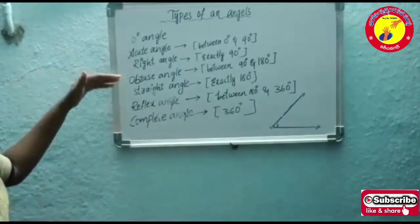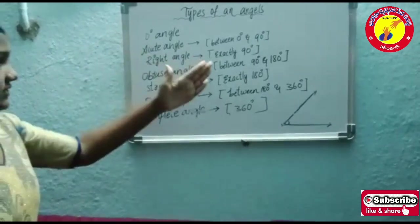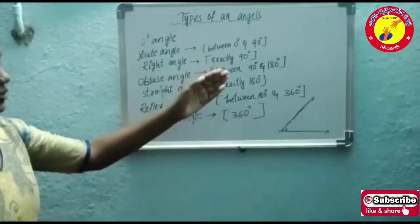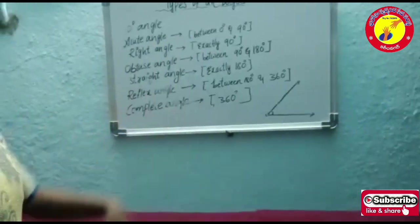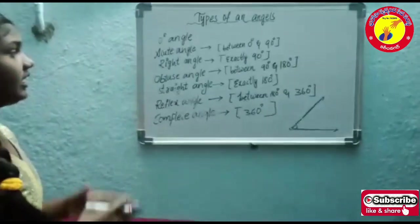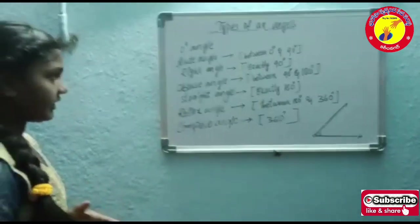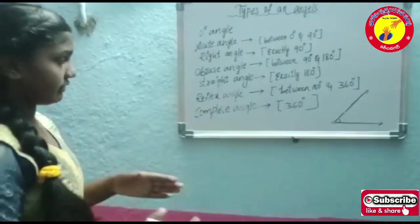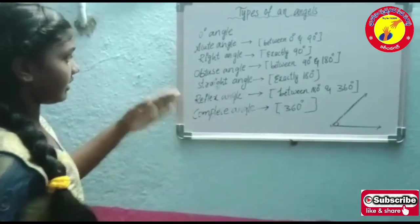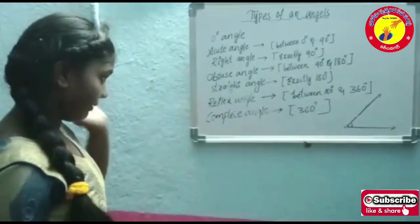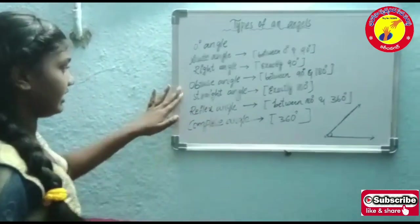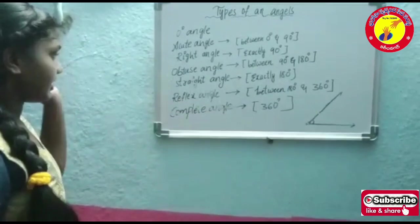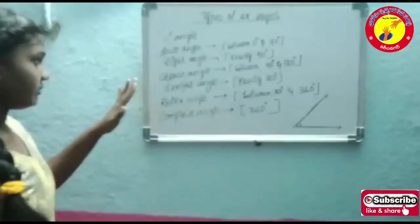The next one is the right angle. Right angle means exactly 90 degrees. And the next one is the obtuse angle — obtuse angle means between 90 degrees to 180 degrees. For example, 100 degrees, 110 degrees, 120 degrees.